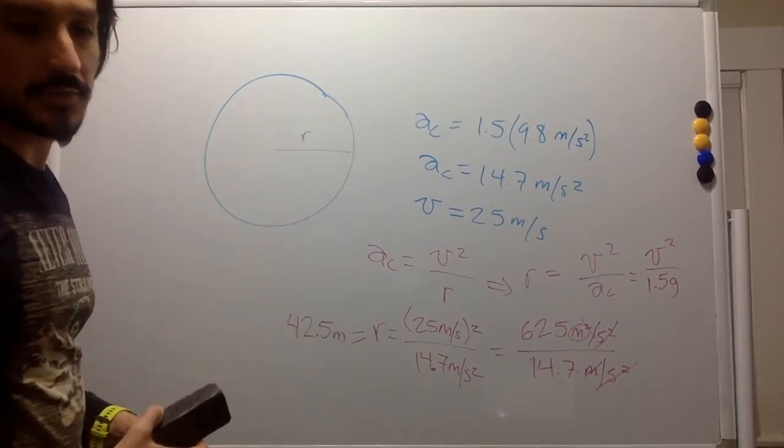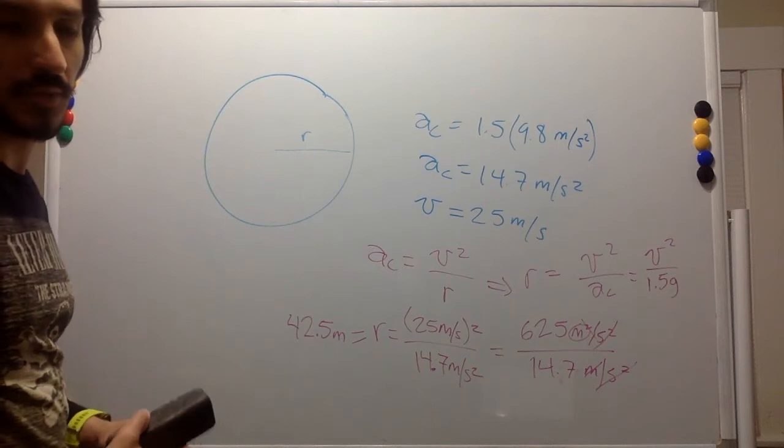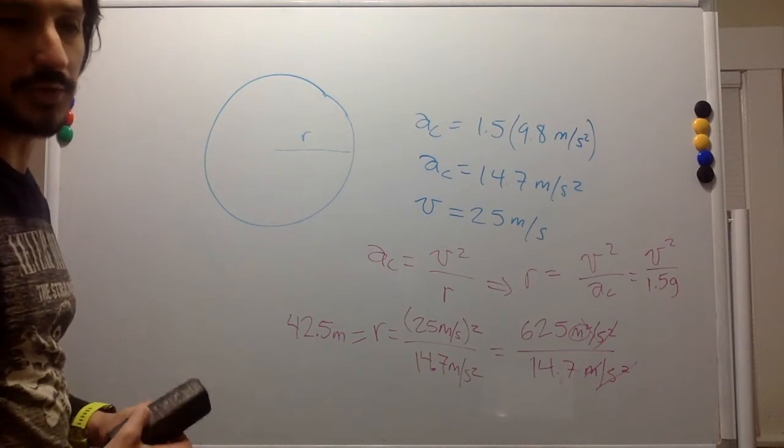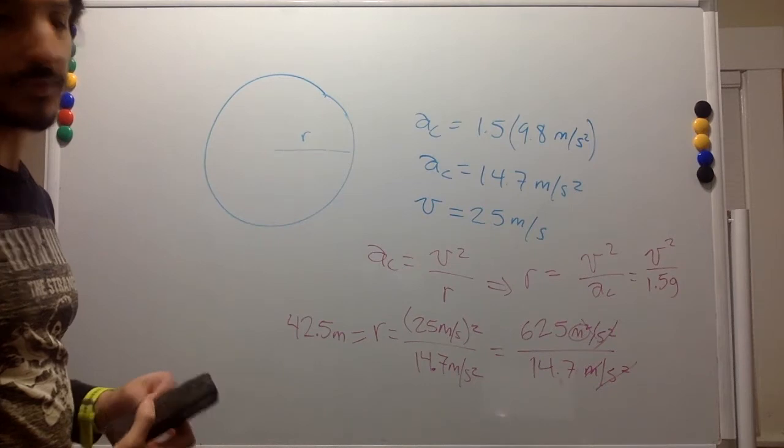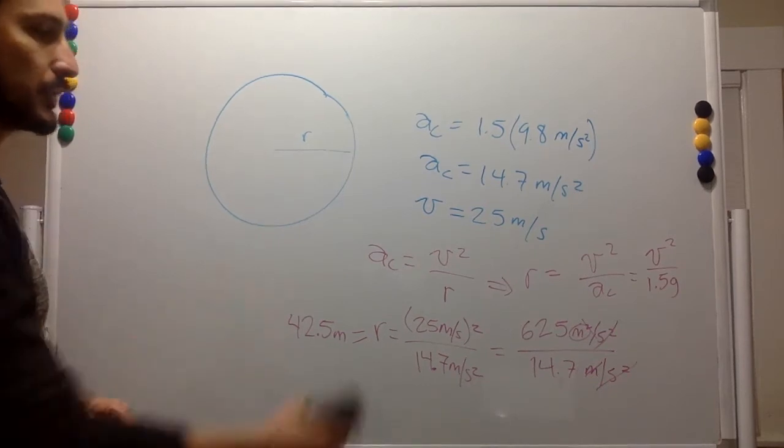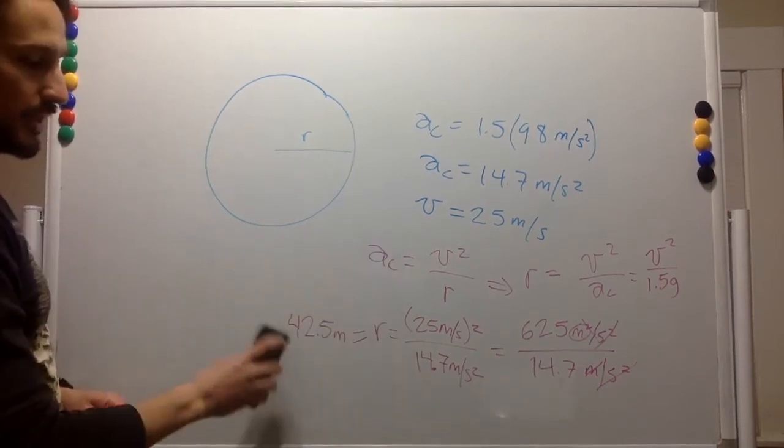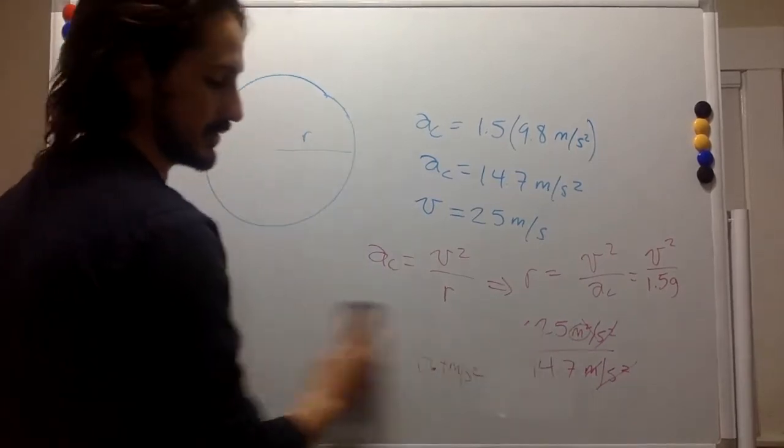If the length of the centrifuge arm is 12 meters, at what speed is the pilot moving when she experiences 10 g's? And so here we're going to use the same equation for centripetal acceleration.